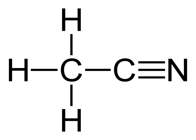Acetonitrile is the chemical compound with the formula CH3CN. This colorless liquid is the simplest organic nitrile. Hydrogen cyanide is a simpler nitrile, but the cyanide anion is not classed as organic.